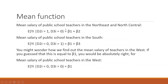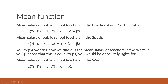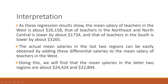The expected mean salary for Northeast and North Central (D2=1, D3=0) is beta1 + beta2. For the South (D2=0, D3=1), it is beta1 + beta3. When both dummies are 0, we get beta1 — the mean salary for the West region. West is the reference category coded as 0. Now let's carry out this analysis in eViews.